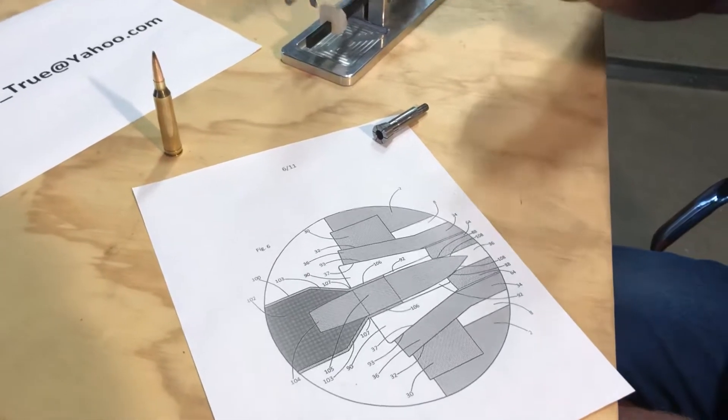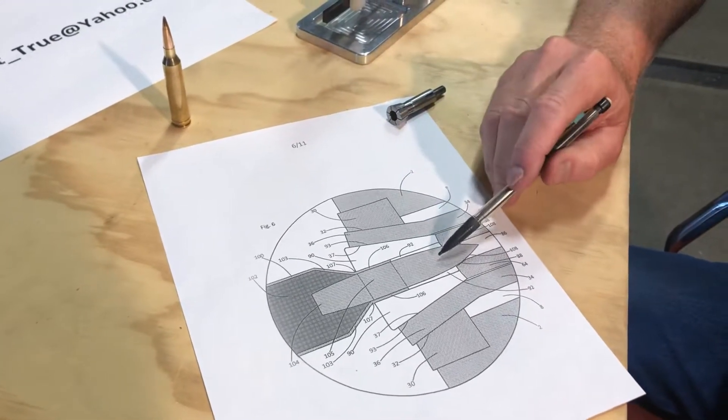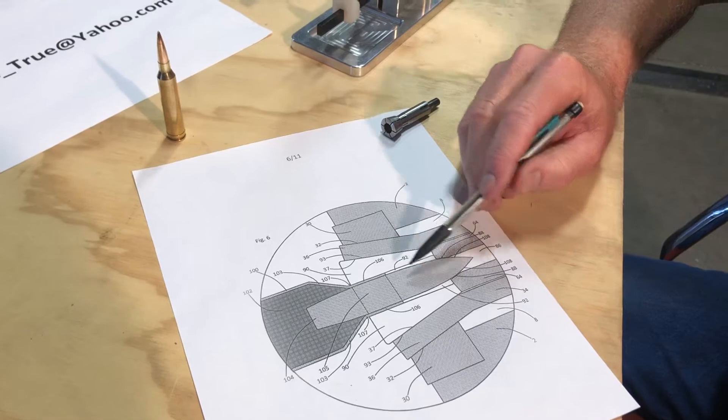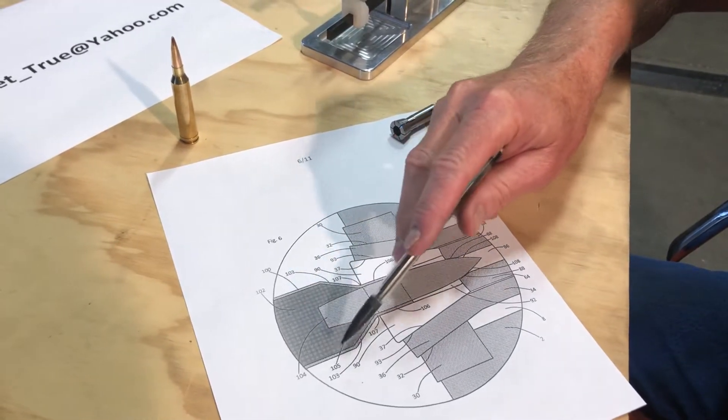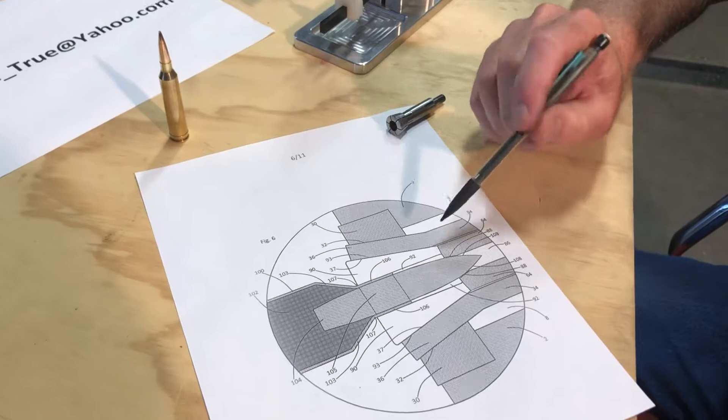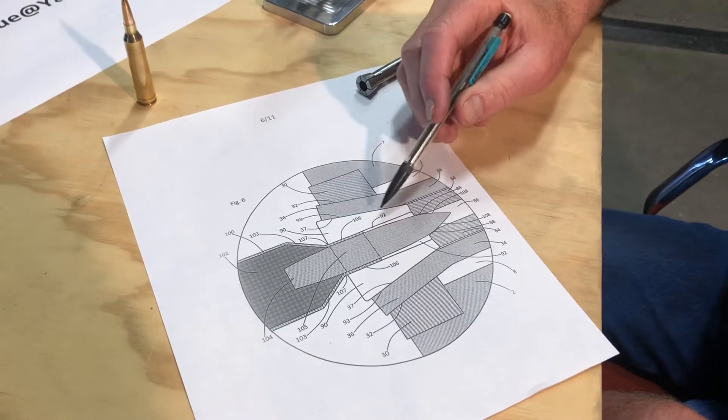We'll go to a drawing so you can see. You have your bullet and the cartridge neck and the cartridge. This white is part of the collet.